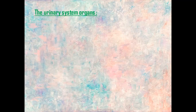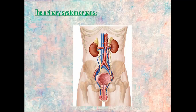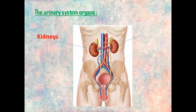Now we'll talk about the urinary system organs. This is a photo of the urinary system, and every system consists of organs. The most important organs are the two kidneys. The urinary system consists of two kidneys: this is the right kidney and this is the left kidney. These kidneys look like beans in their shape.